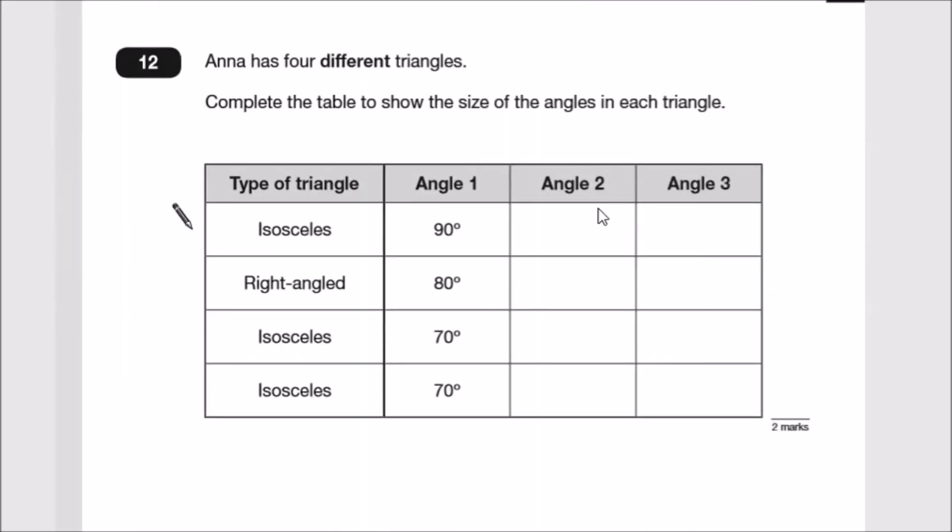Number 12: Anna has four different triangles. Identify what missing angles could be to show the size of angles. Complete the table showing size of angles for each triangle. If one angle in an isosceles is 90 degrees, the remaining two must sum to 90. Because it's isosceles, two angles must be identical, so half of 90 is 45 each. If a triangle is right-angled, there must be a 90 degree somewhere. If it's not specified, we call this 90, so we need 10 more degrees to make 180.